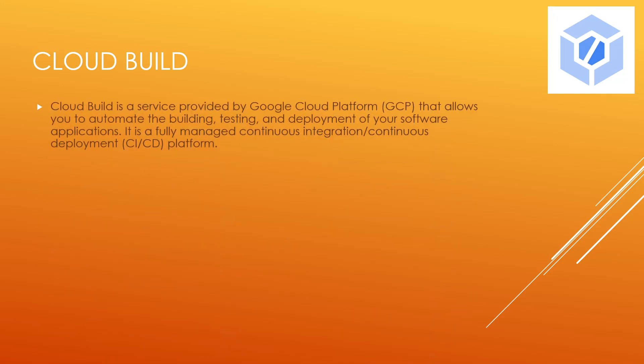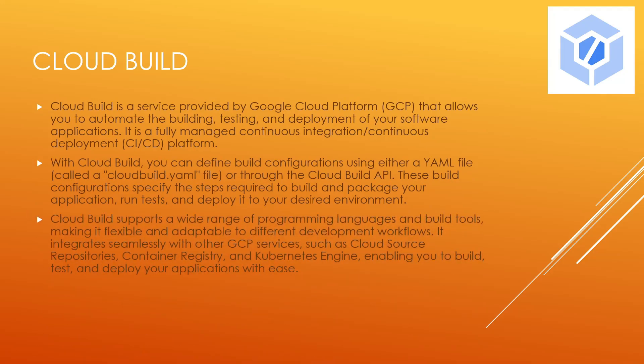The next one is Cloud Build. Cloud Build is a service provided by GCP that allows you to automate the building, testing, and deployment of software applications into a fully managed Continuous Integration Continuous Deployment platform. With Cloud Build, you can define a build configuration using either a YAML file called cloudbuild.yaml or through the Cloud Build API. These build configurations specify the steps required to build and package your application, run tests, and deploy it to your desired environment. Cloud Build supports a wide range of programming languages and build tools, making it flexible and adaptable to different development workflows. It integrates seamlessly with other GCP services such as Cloud Source Repositories, Container Registry, and Kubernetes Engine, enabling you to build, test, and deploy your application with ease. By automating your build and deployment process, you can save time, reduce errors, and improve overall efficiency of your software development lifecycle.